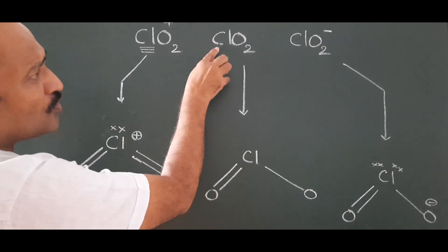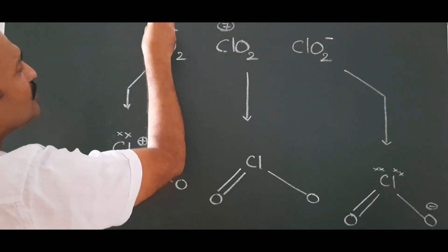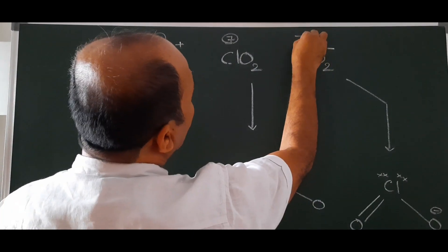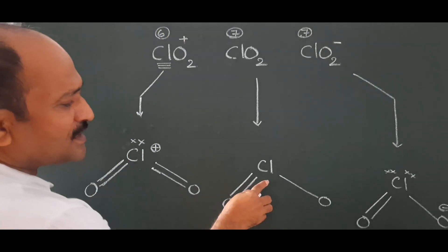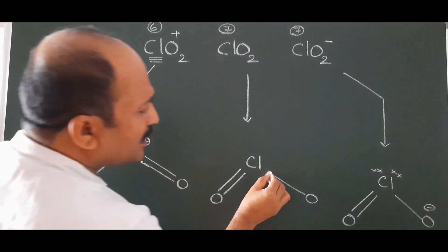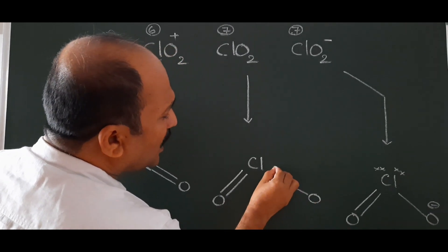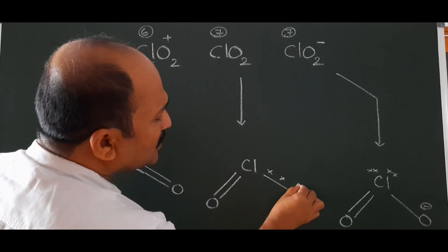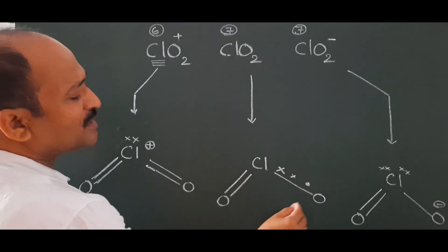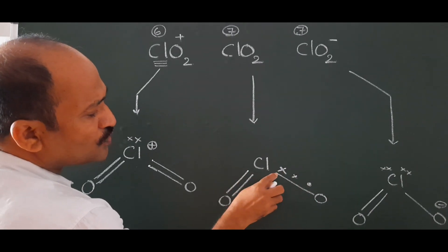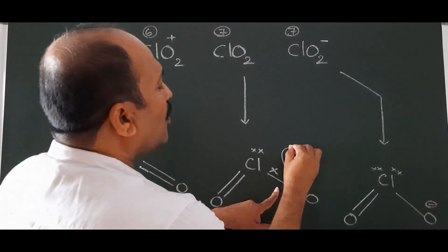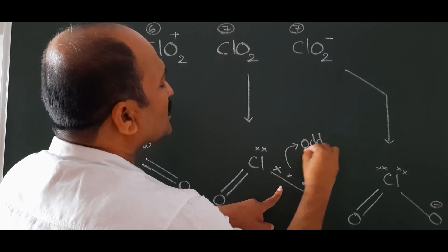In ClO₂, chlorine has seven valence electrons. Two are involved in one double bond, and in the second bond, three electrons are involved in bond formation — one, two, three, four, five — leaving one pair on the chlorine atom. This bond is called an odd electron bond; that is the special bond.